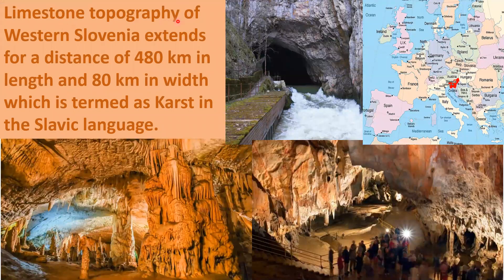The limestone topography of western Slovenia extends for a distance of 480 km in length and 80 km in width, which is termed 'karst' in the Slavic language. This is a massive structure of western Slovenia's limestone topography.